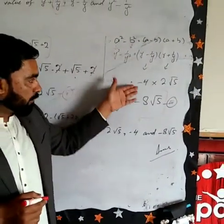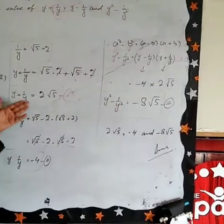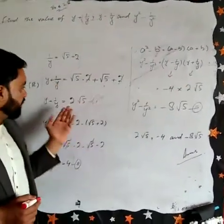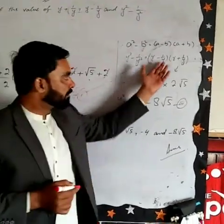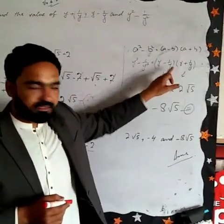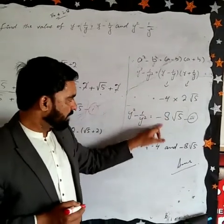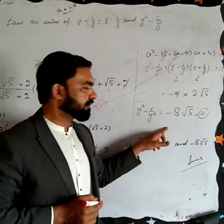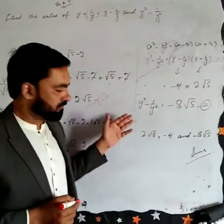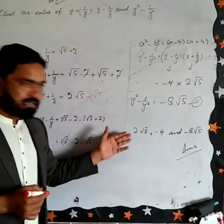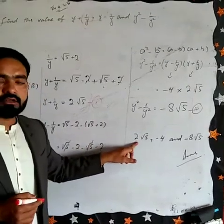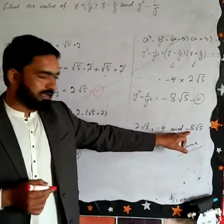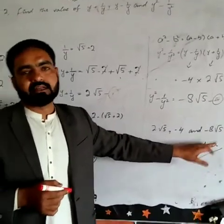Y + 1/Y is 2√5, so (2√5)² - 2. 2² is 4, (√5)² is 5, so 4 × 5 = 20. Then 20 - 2 = 18. So Y² + 1/Y² equals 18.